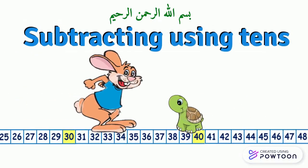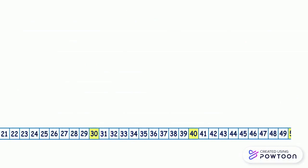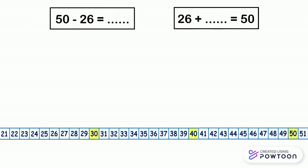Adding and subtracting using tens. To subtract or find the missing number, we can use the number line. We jump on the number line to arrive at the requested number. For example, 50 minus 26. It is as if we are finding the missing number. 26 plus what gives us 50?